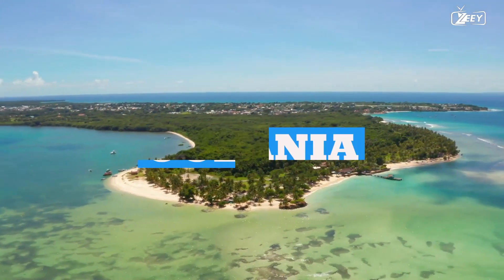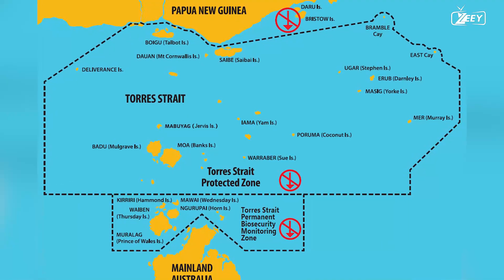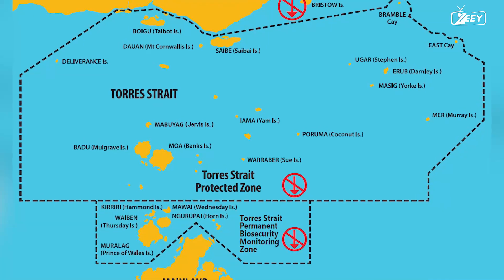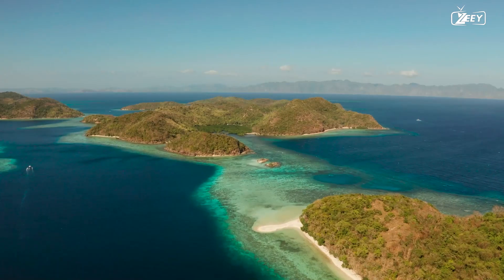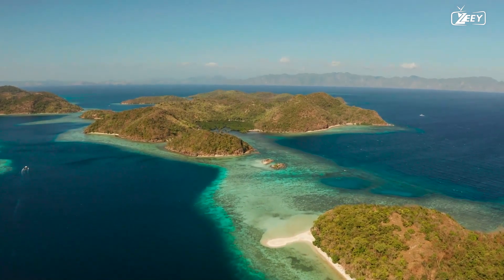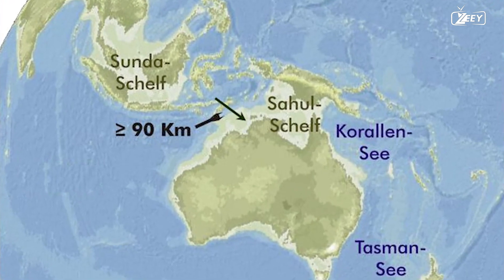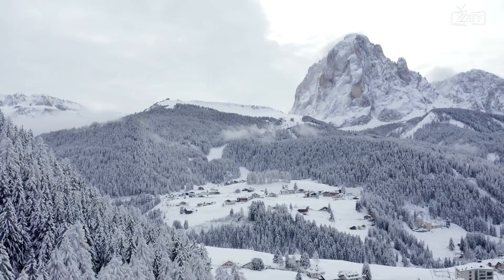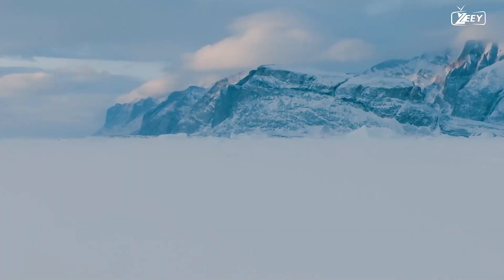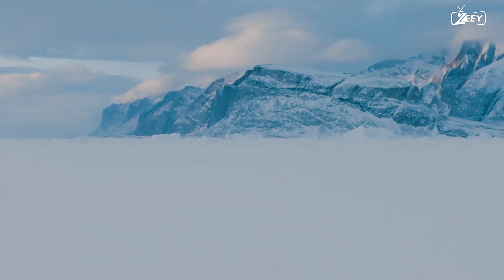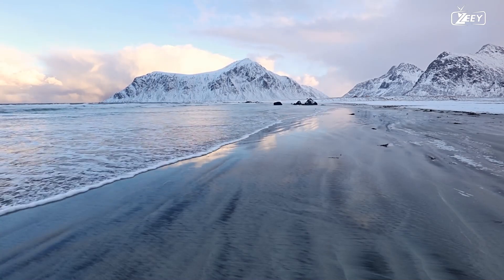Oceania: Oceania experienced substantial changes throughout this time period. The Torres Strait currently separates Australia and New Guinea, but it did not exist during the previous Ice Age. Instead, an emerging land joined Australia and New Guinea, establishing a single continent also linked to Tasmania, known as Sahul. With a surface area of 12 million square kilometers, it may have been as large as Antarctica is now. The temperatures would have resulted in gigantic glaciers covering Tasmania, and the two New Zealand islands would have been combined into a single massive island equally covered with glaciers.